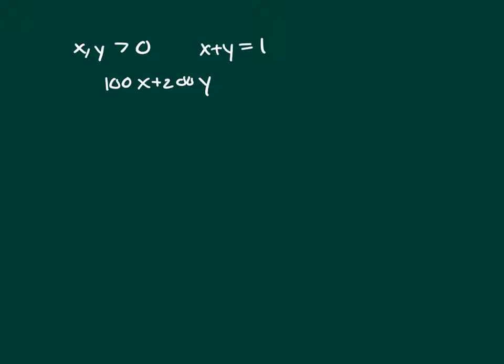We're trying to figure out which of the following could be a value of 100x plus 200y. We know x plus y is 1. So let's simplify this 100x plus 200y.